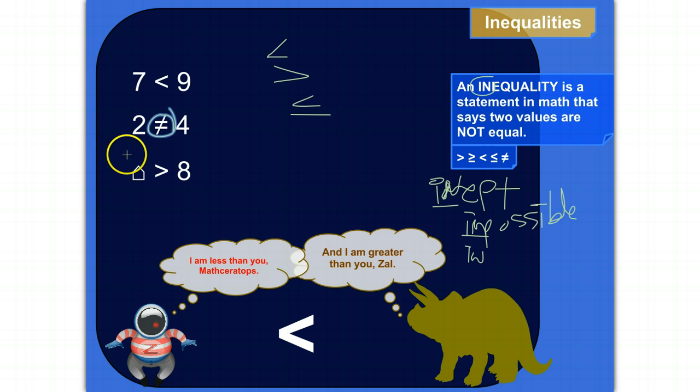Kind of looks like a telephone pole that's getting knocked over by this 2. 2 is not equal to 4. I'm not saying if it's less or greater, it's just not equal.